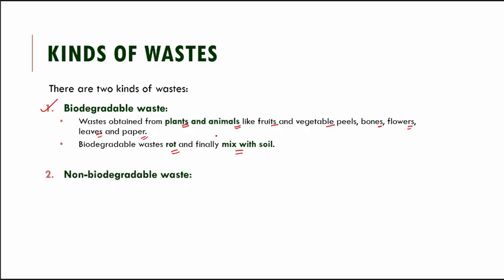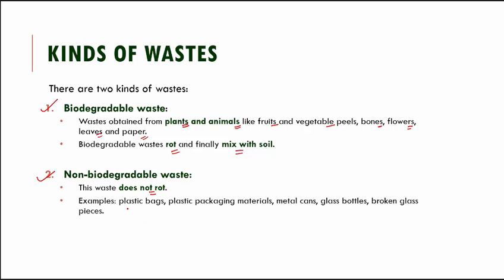The second kind is non-biodegradable waste, which is the opposite — it does not rot. No matter how many years you leave it there, it will still remain, like plastic bags, plastic packaging material, metal cans, glass bottles, and broken glass pieces. They do not decompose, so they are all called non-biodegradable waste.